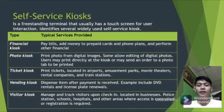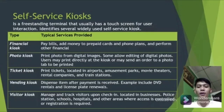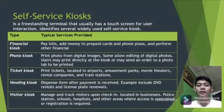A self-service kiosk is a freestanding terminal that usually has a touch screen for user interaction. There are five types: financial, photo, ticket, vending, and visitor. A financial kiosk allows you to pay bills. A photo kiosk allows users to edit or print pictures. A ticket kiosk provides receipts for purchases or payments. A vending kiosk is a machine where you can buy food and drinks. A visitor kiosk manages the entry and exit of people in a business location.